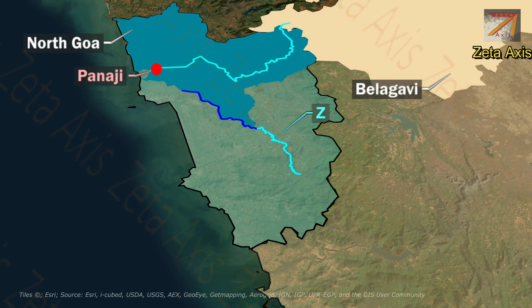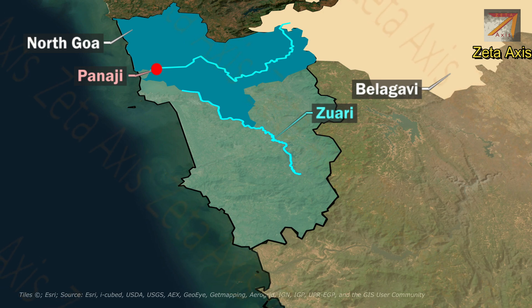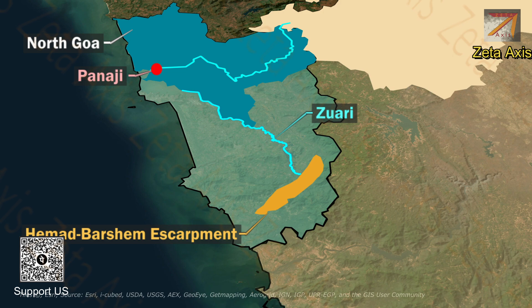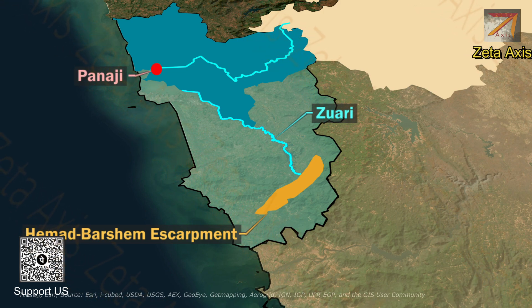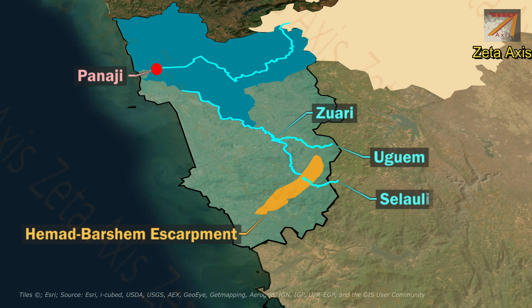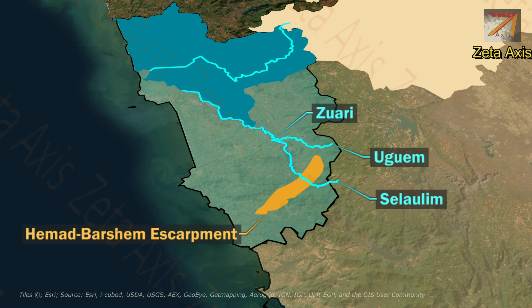The second important river of Goa is the Zuari river. The Zuari river is formed from the Hamal Barsem escarpment of the Western Ghats. It is formed by the merger of two of its headstreams: the Ugyum river and the Salolim river.